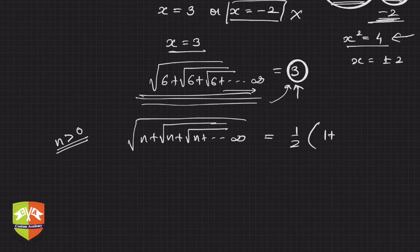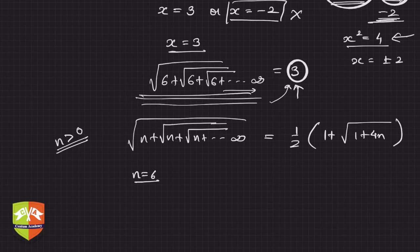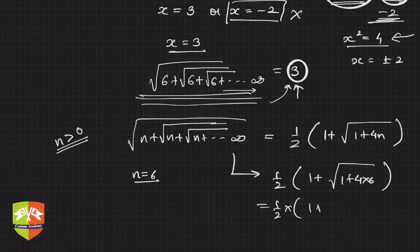If n is a positive quantity, then this value will be nothing but half times 1 plus under root 1 plus 4n. Okay, you can check, right? Now what was n? n was 6. So this value will be nothing but half into 1 plus under root 1 plus 24, 4 times 6 is 24, right? So which is nothing but half times 1 plus 5, and hence it is 3. So it matches.